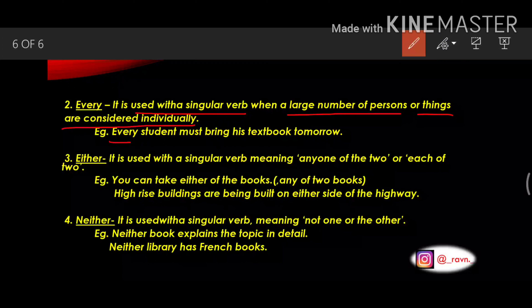Next is either. It is used with a singular verb. It means any one of the two or each of the two. Example: you can take either of the books — meaning you can have any of the two books. Second example: high rise buildings are being built on either side of the highway — meaning both sides of the highway.